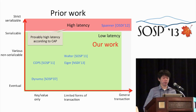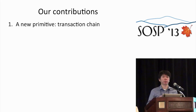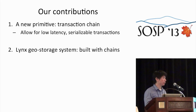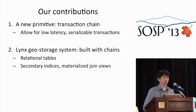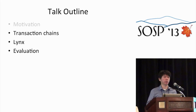Our work pushes this boundary even further. We show that in most situations it's possible to achieve serializable transactions at low latency. We made two contributions: first, we proposed a new programming primitive called the transaction chain, which is the key to providing serializable transactions at low latency. Second, we built Lynx, a storage system that supports relational tables, secondary indices, and materialized join views, all based on this chain primitive. I'll now dive into the details of our system.